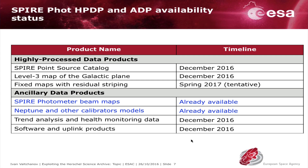To finish with the products: here is a table showing the timeline for when we will make available some of the highly processed data products and ancillary data products. The Spire Point Source Catalog will be made available in December 2016 or early January 2017. The Level 3 galactic plane map is on a similar timescale, and the maps with residual striping will probably be provided in spring 2017, depending on manpower. Ancillary data products already available in Spire calibration — beam maps, beam profiles, filters, transmission curves, Neptune and other calibration models — are also already available, while engineering files for trend analysis, health monitoring, software, and uplink products will be made available at the end of the year.